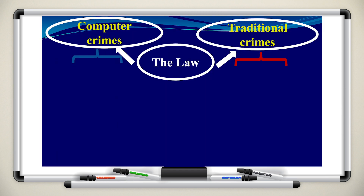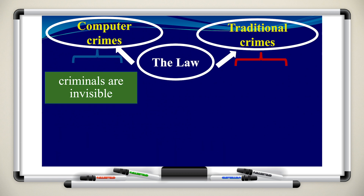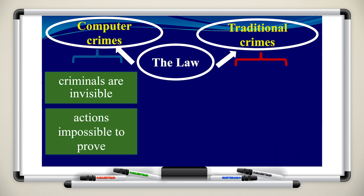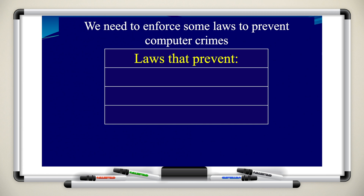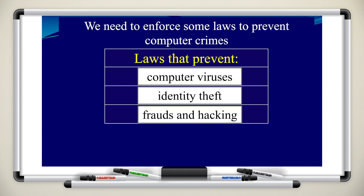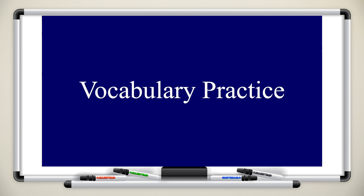Let's take a look at this slide now. We have the law, computer crimes with techno-criminals, and traditional crimes. With computer crimes, criminals are invisible — you can't see who's stealing from you — and the actions are impossible to prove. With traditional crimes, there is stolen equipment and it's easy to track the criminals because something is actually stolen. We need to enforce laws to prevent computer crimes such as computer viruses, identity theft, fraud, and hacking.